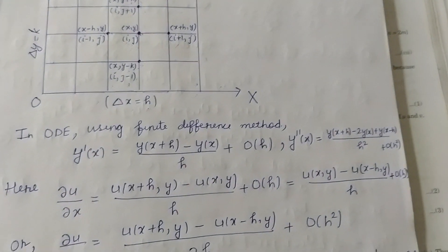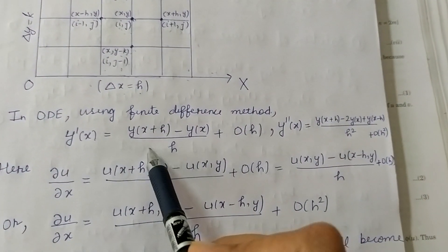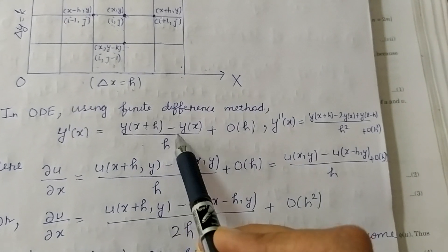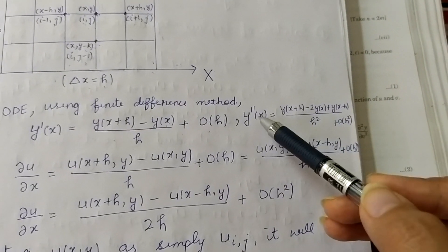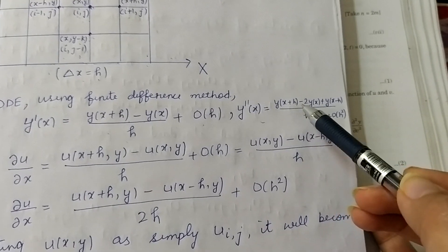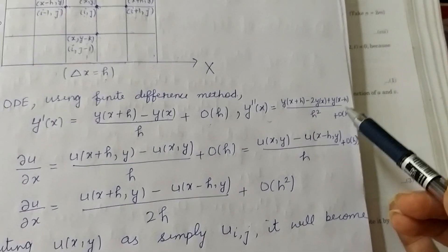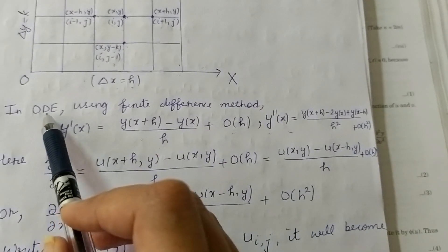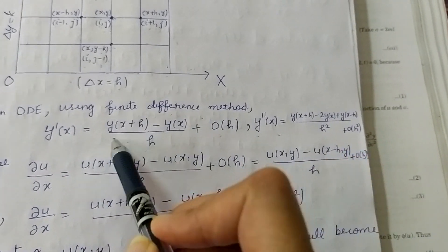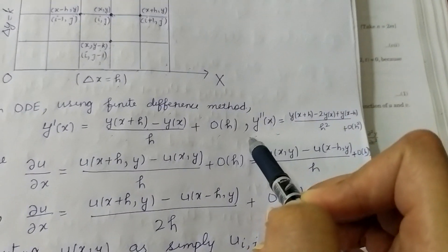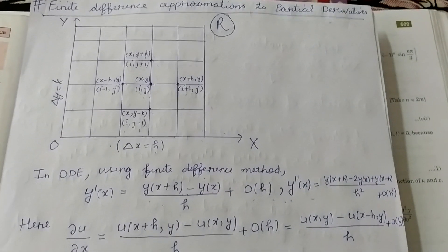In ordinary differential equations, you used finite difference method and wrote: y'(x) = [y(x+h) − y(x)] / h plus higher order terms of h. Similarly, y''(x) = [y(x+h) − 2y(x) + y(x−h)] / h² plus higher order terms of h². These formulas from ODE finite difference method will now be used to derive corresponding formulas for partial differentiation.